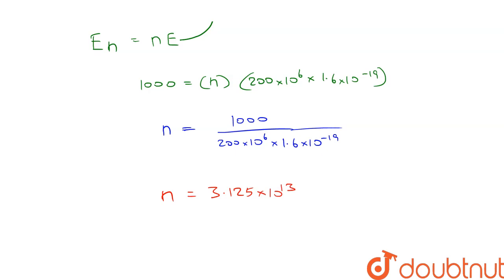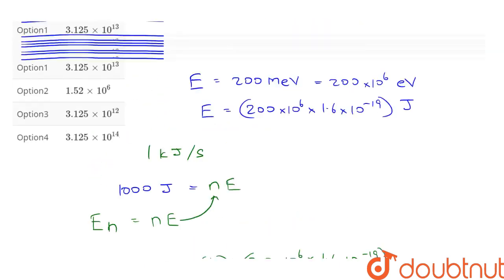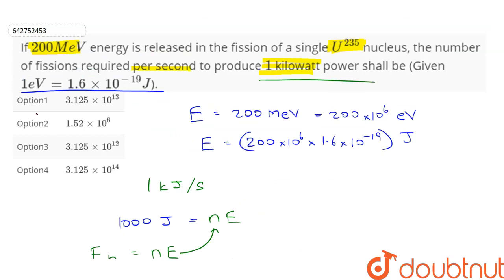Upon calculation, we get n is equal to 3.125 × 10^13. This is the answer, and this is given in Option 1. Therefore, Option 1 is the correct answer.